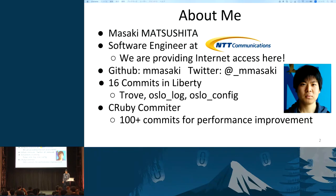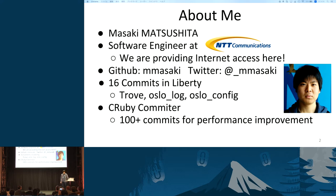I'm Masaki Matsushita, a member of the OpenStack R&D team at NTT Communications. We are the largest telecom company in Japan and providing internet access here as a network sponsor. I started contributing to OpenStack since the Kilo cycle. In the Liberty cycle, 16 patches were committed to Neutron, OsloLog, and OsloConfig. I also work for CRuby as a committer, mainly for performance improvement.